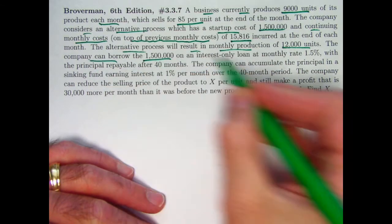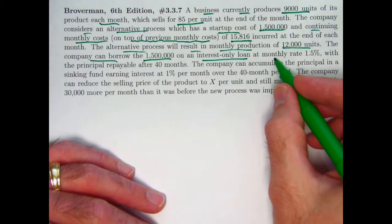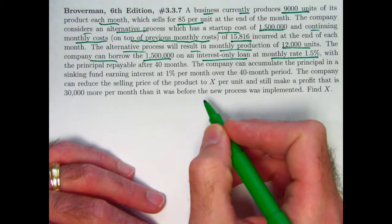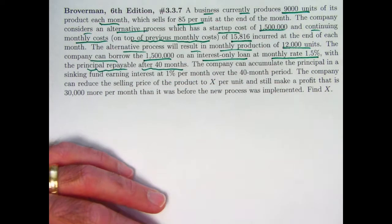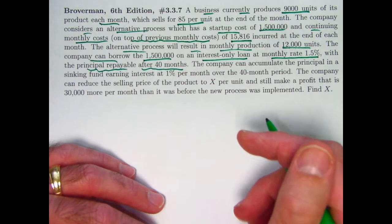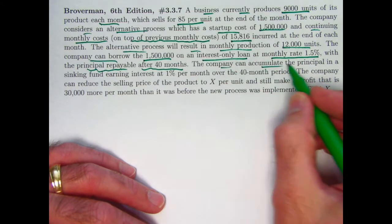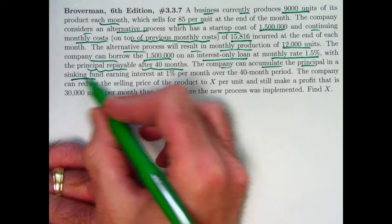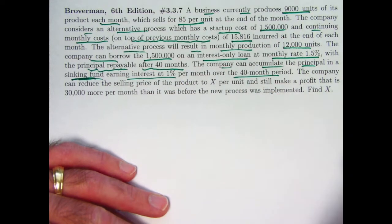The company can borrow the $1.5 million on an interest-only loan where interest is paid at a monthly rate of 1.5% every month until the end when the principal is repayable after 40 months. You've got to pay back that $1.5 million. How is the company going to pay back that principal? It's going to accumulate the principal in a sinking fund that earns interest at 1% per month over the 40-month period.